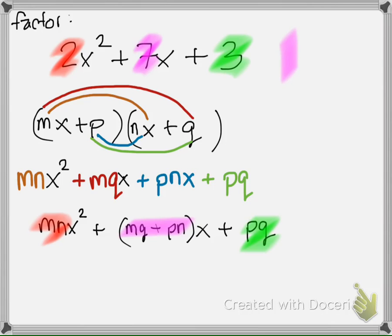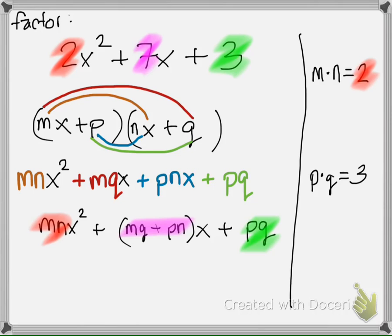I'm going to show my work over here on the right-hand side. We know that m times n has to be 2. How do we know that? We know that because m times n is the value of a. It's the coefficient of x squared.